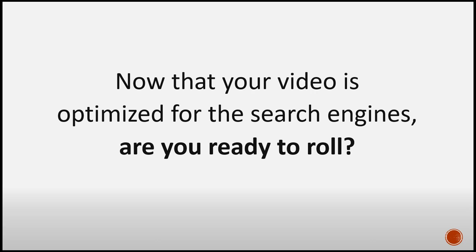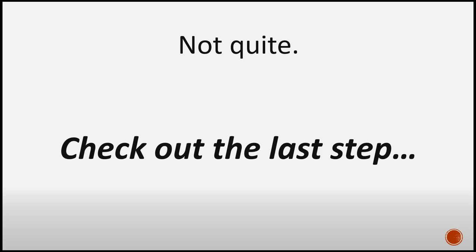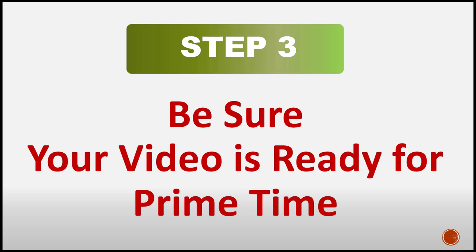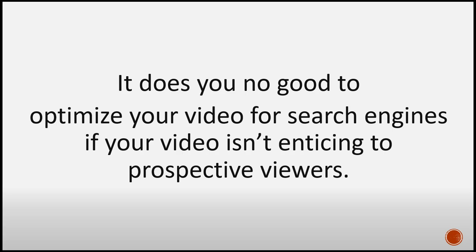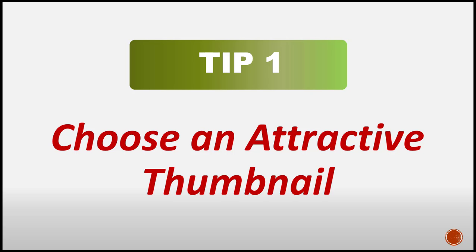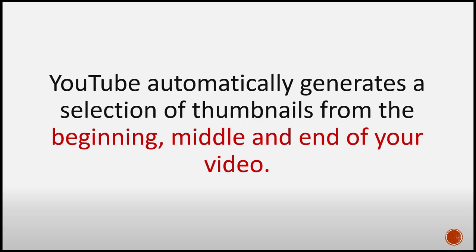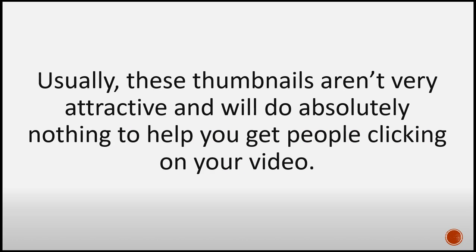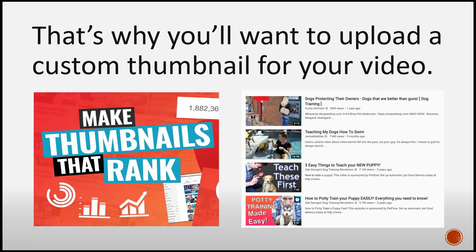Now that your video is optimized for the search engines, are you ready to roll? Not quite — check out the last step. Step 3: Be sure your video is ready for prime time. It does you no good to optimize your video for search engines if your video isn't enticing to prospective viewers. That's why you'll want to be sure your content is enticing and engaging. Tip 1: Choose an attractive thumbnail. YouTube automatically generates a selection of thumbnails from the beginning, middle, and end of your video. Usually these thumbnails aren't very attractive and will do absolutely nothing to help you get people clicking on your video. That's why you'll want to upload a custom thumbnail.